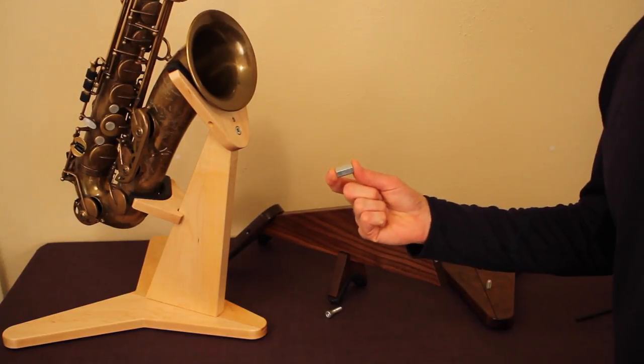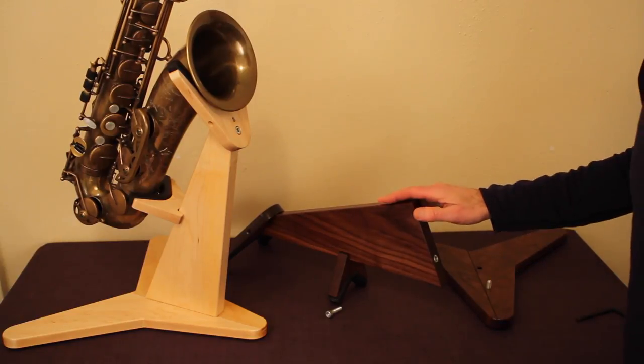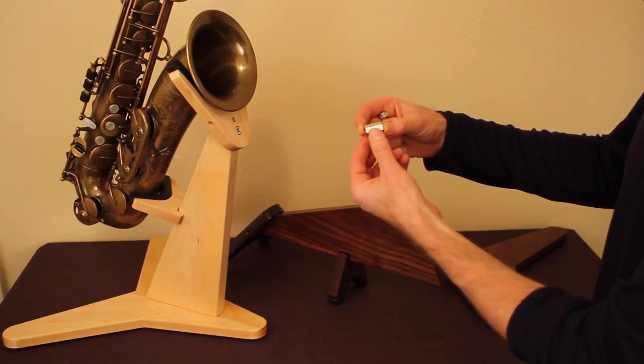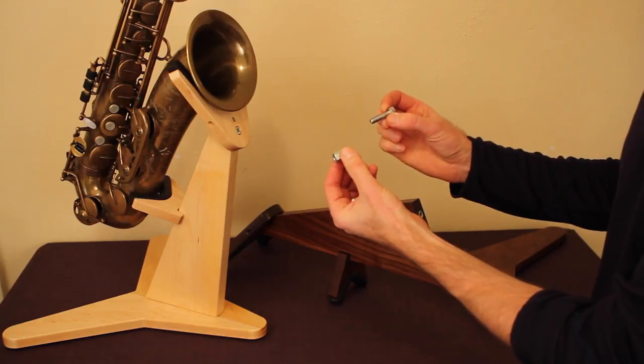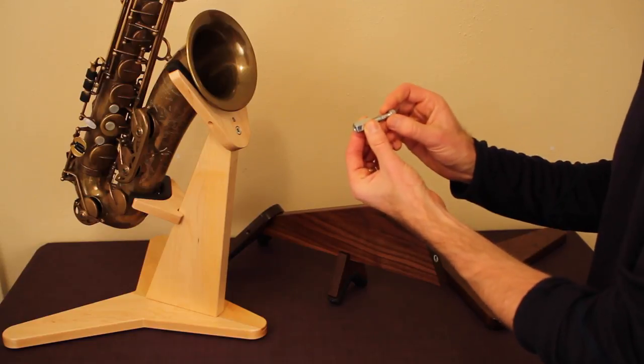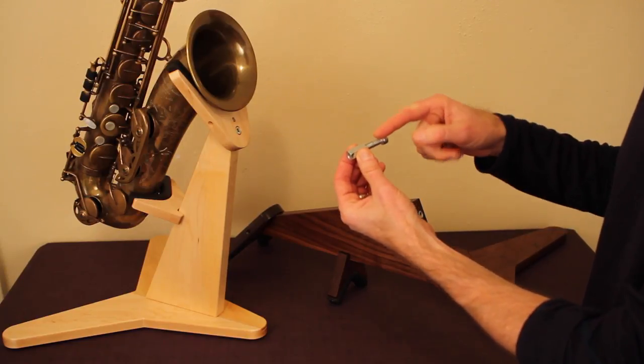So you can see, with our saxophone stand, the connection between the base and the upright is an all-metal connection. We use an M8 coupling nut, which is basically a really long steel nut, and an M8 steel bolt, to get a threaded connection, which is very robust and far exceeds the performance you'd get out of a wood screw into wood.